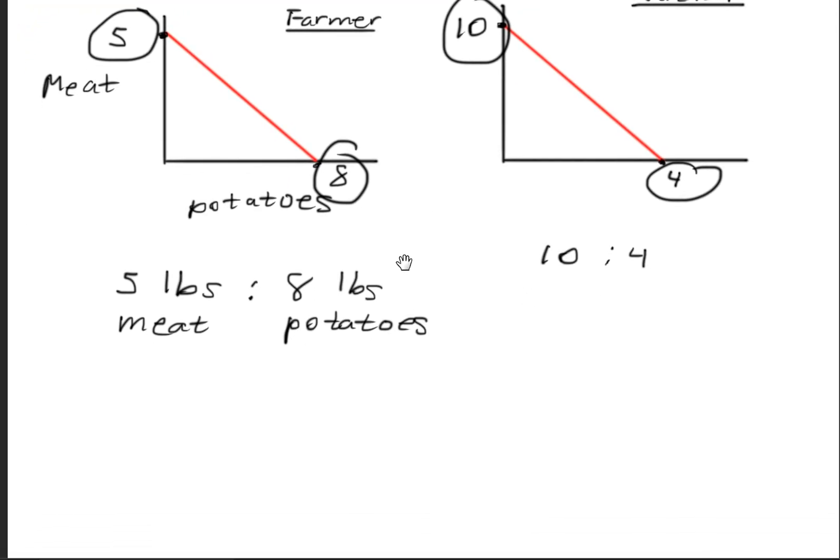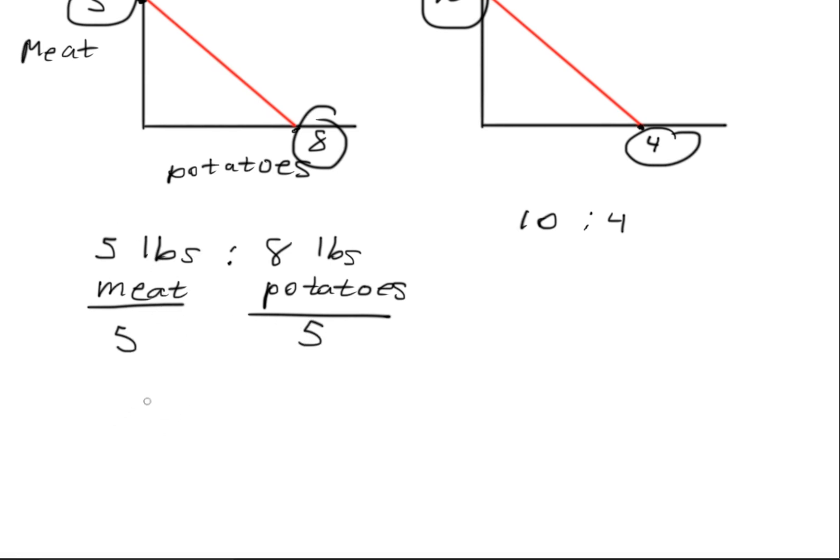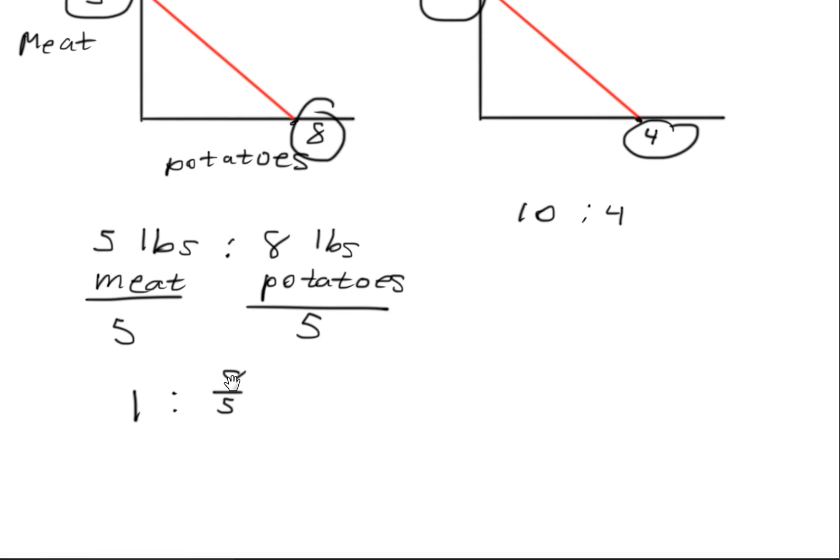Now, in order to do a comparison, one of these quantities needs to be constant. So we need to reduce it down to 1. So let's compare the potatoes. What we'll do is divide by 5 on both sides. This will cancel this section right here and we'll get 1. And we can do 8 over 5. We can further reduce that and we can have 1 and 1.6.